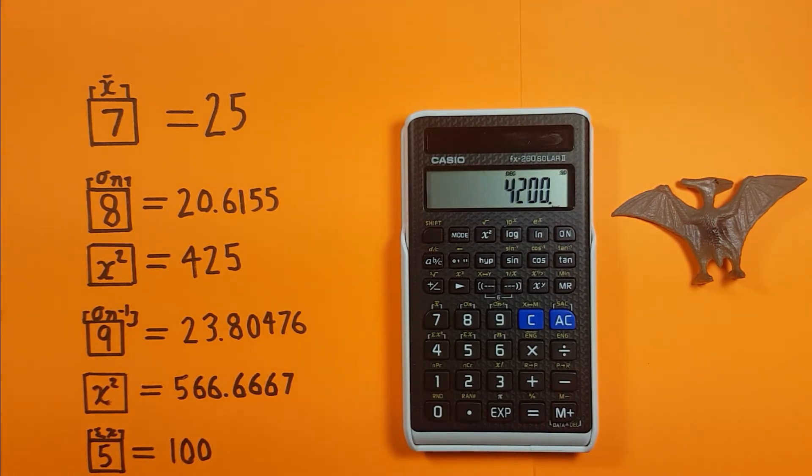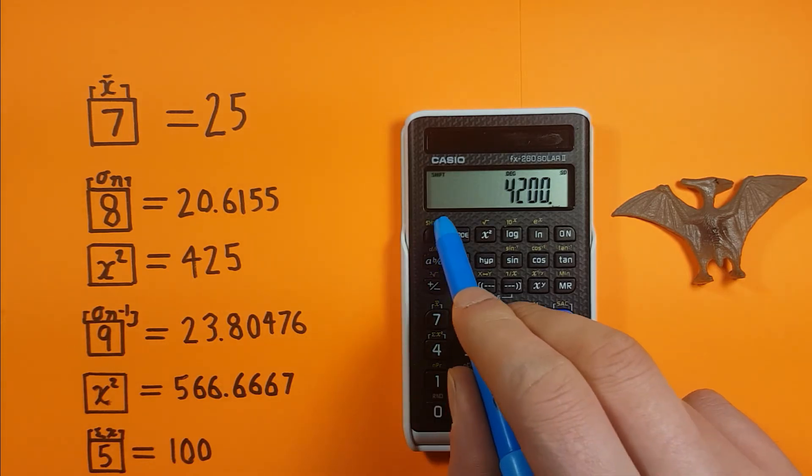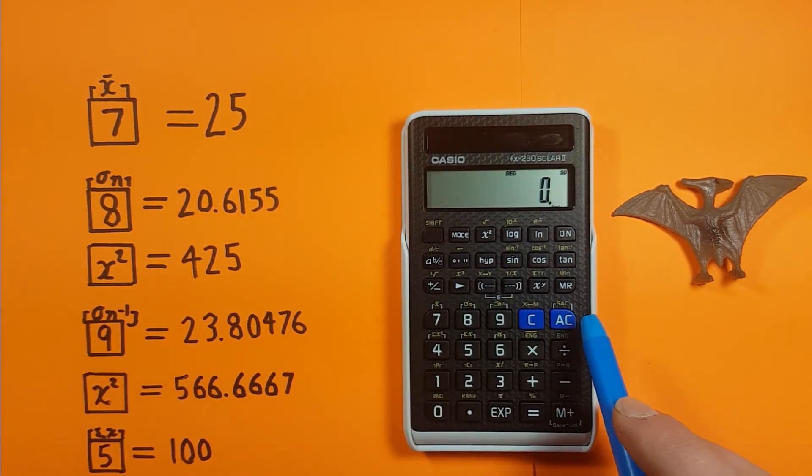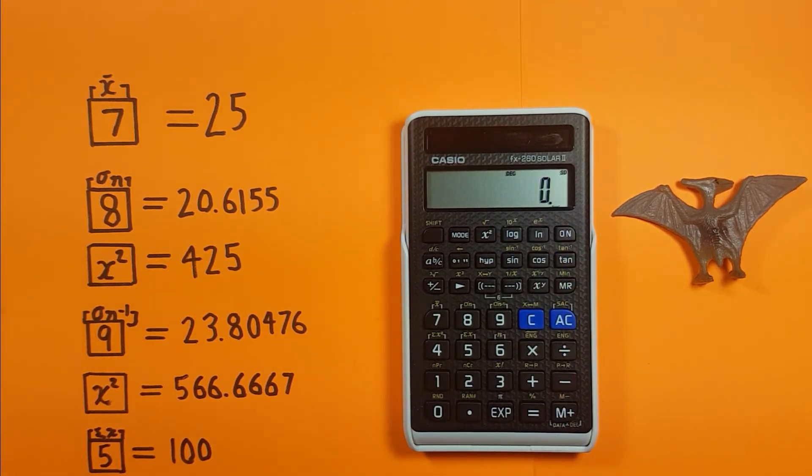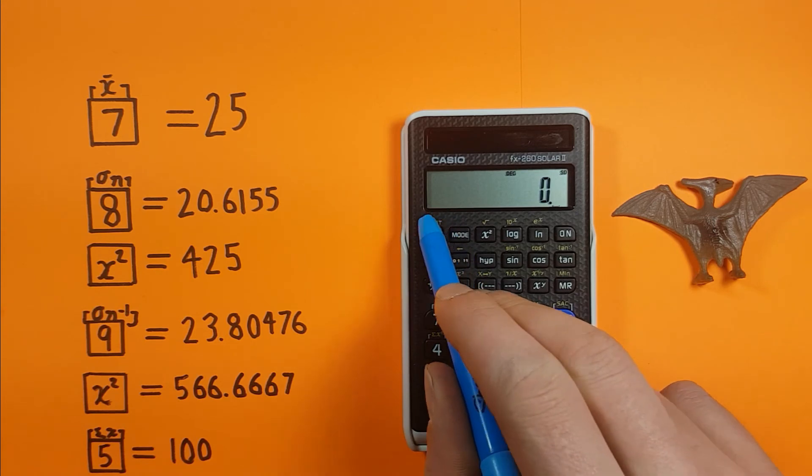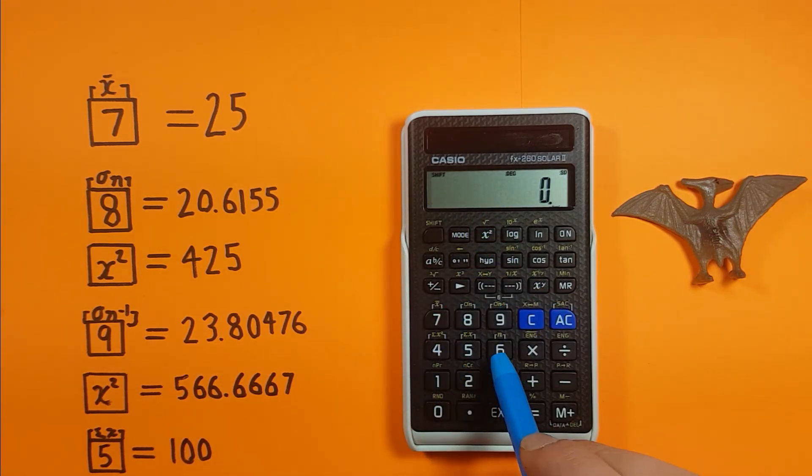So that covers all the basic statistics we can do with this calculator. When we're done it's a good idea to make sure we clear the data so we press shift AC again. We see that goes to 0 and we can confirm it's been cleared by pressing shift 6 - we see we have zero items in the data set.